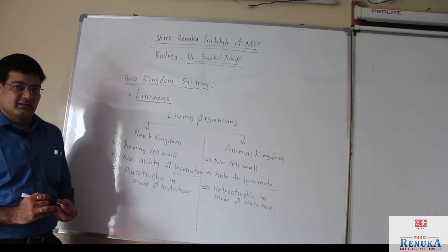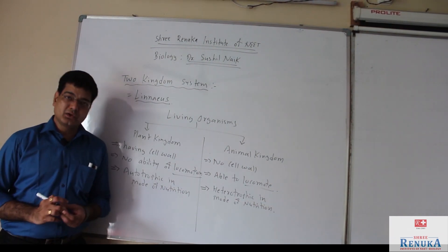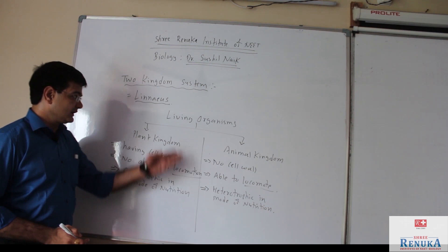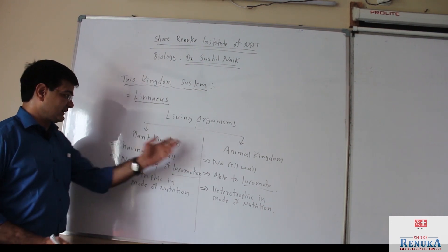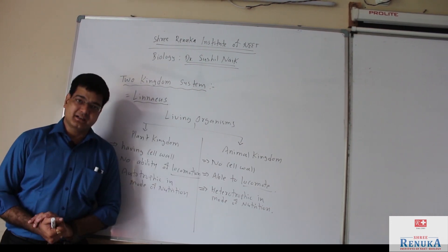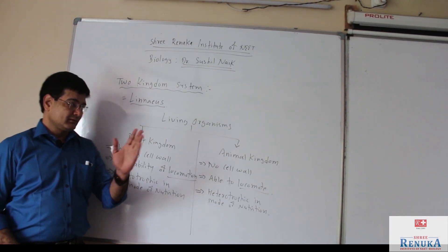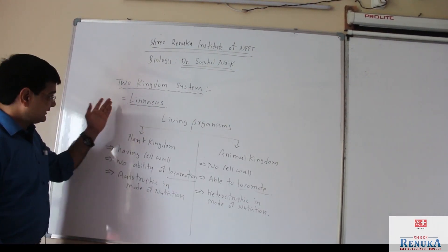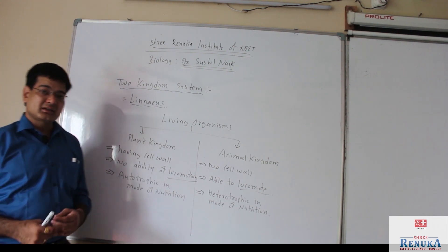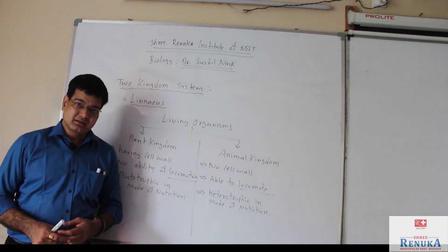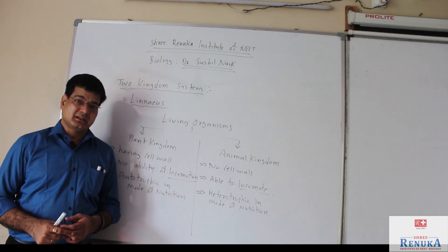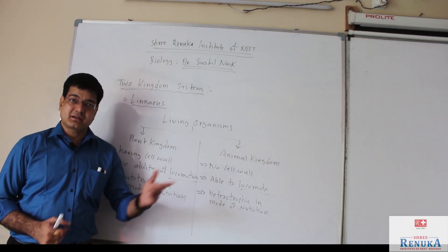These are the basic criteria according to which living organisms are classified as plant and animal. But in this two kingdoms system of classification, many drawbacks were found.